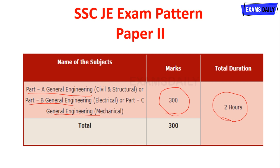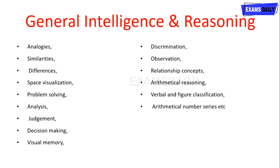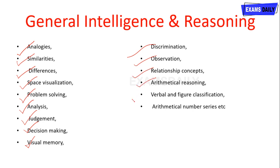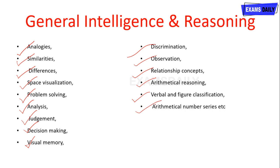For Paper 1, the detailed syllabus: General Intelligence and Reasoning topics include analogies, similarities, differences, space visualization, problem solving, analysis, judgment, decision making, visual memory, discrimination, observation, relationship concepts, arithmetical reasoning, verbal and figure classification, and arithmetical number series.